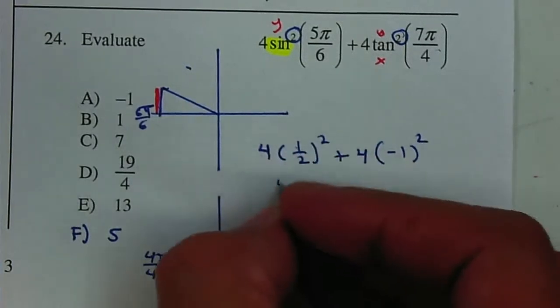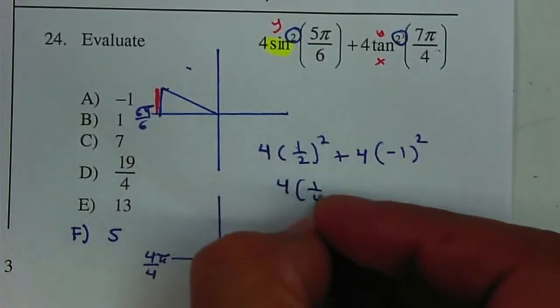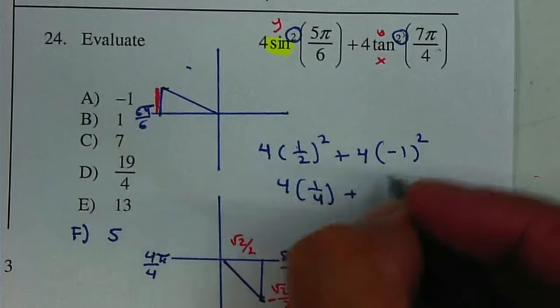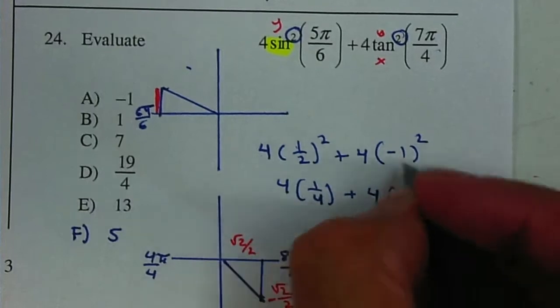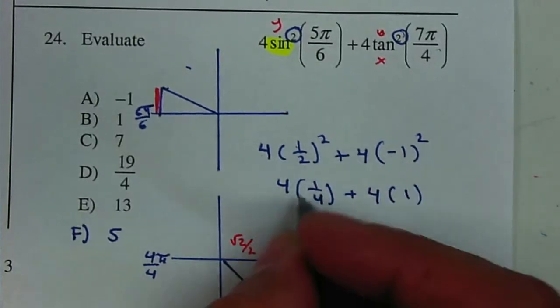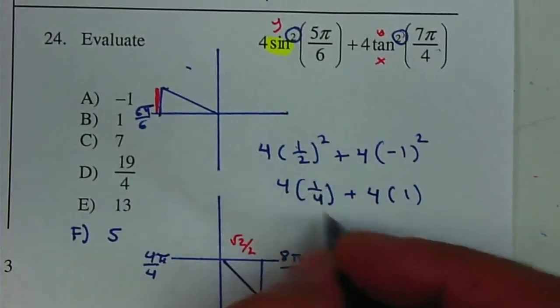1 half squared will be 1 fourth plus 4. Negative 1 squared is 1. 4 times 1 is 4. Divided by 4 is 1.